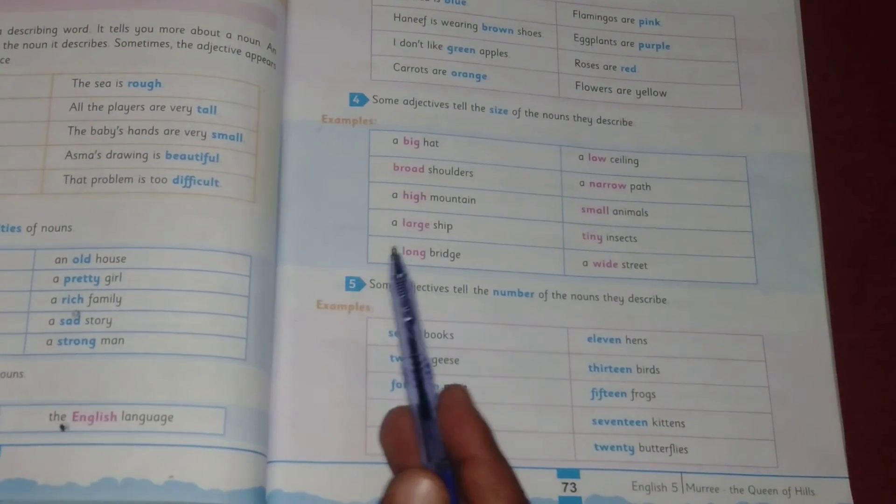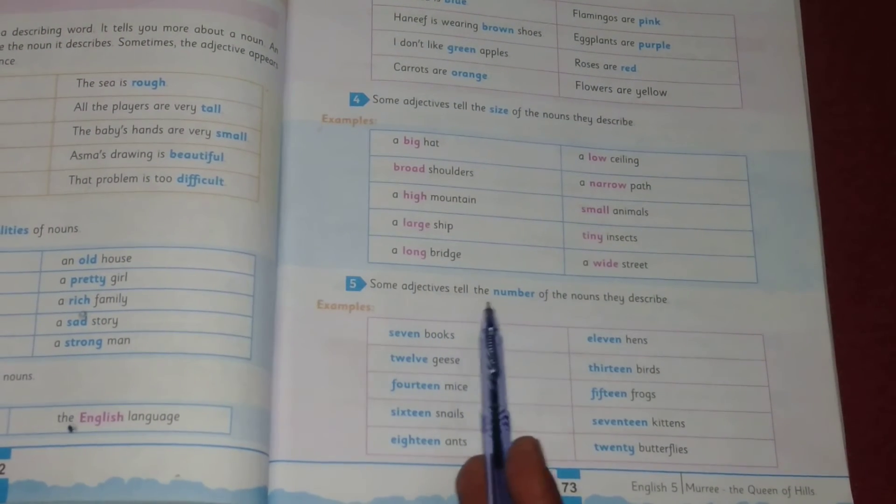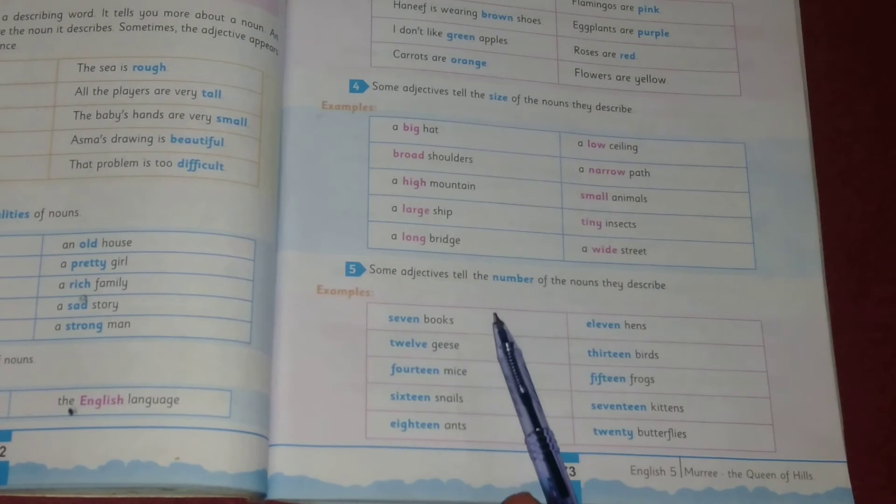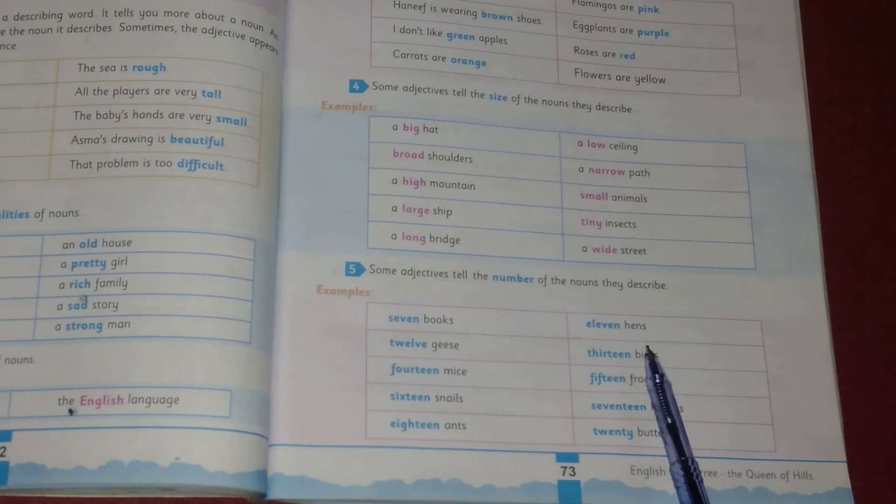Number five: some adjectives tell the number of the nouns they describe. Some adjectives tell about the number of the nouns. Examples: seven books, twelve geese, fourteen mice, sixteen snails, eighteen ants, eleven hens, thirteen birds, fifteen frogs, seventeen kittens, and twenty butterflies. All these are adjectives of number.